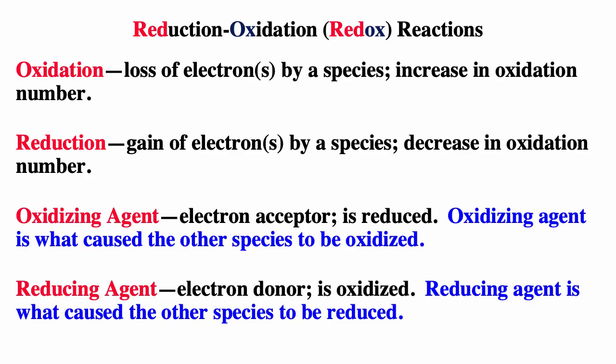An electrochemical reaction is also called a redox reaction — redox standing for reduction and oxidation. Oxidation is the loss of electrons by a species. If you lose electrons, you're losing a negative charge and so the oxidation number increases. The oxidation number and oxidation state are the same thing — it's the charge an atom would have if the bonds in the molecule were purely ionic.